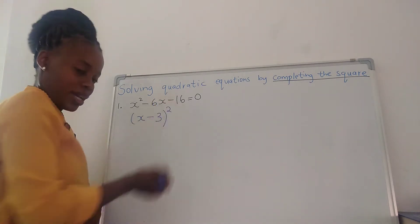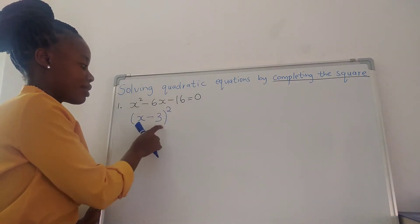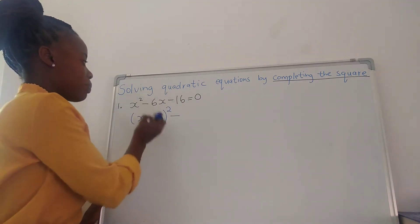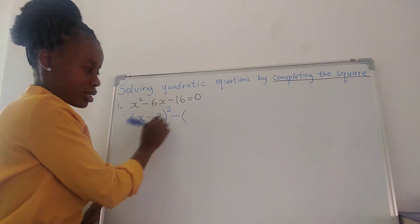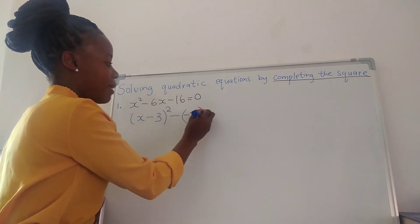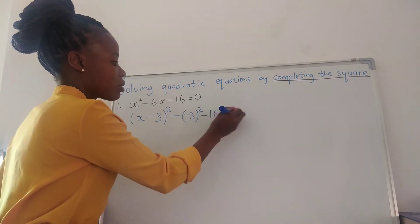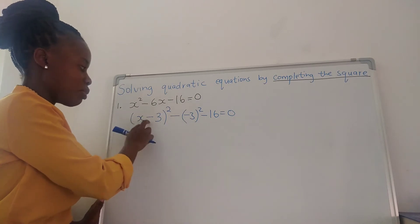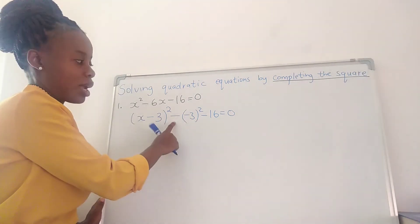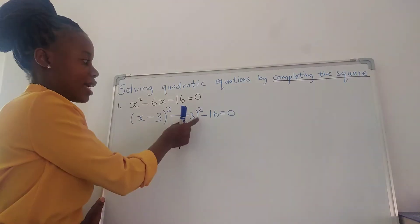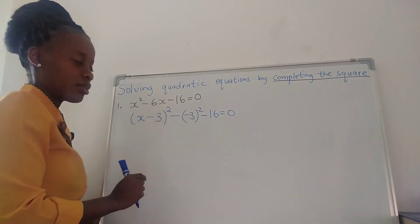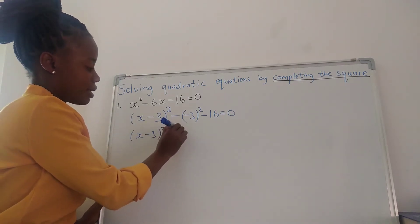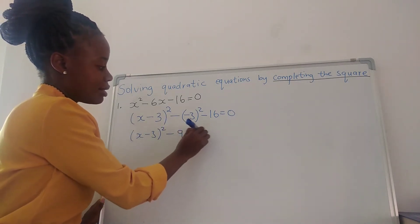Then you square this. After you square this, you subtract — you always subtract this squared. Negative 3 squared minus 16 equals to 0. Make sure that you always subtract, whether the term is positive or not. You always subtract and you always square it.